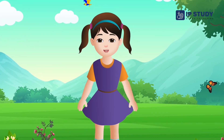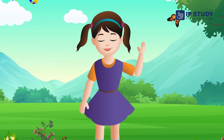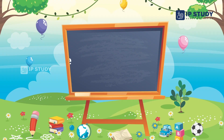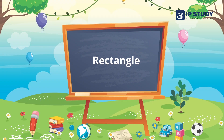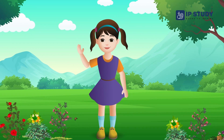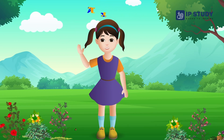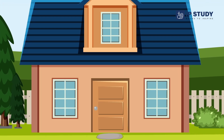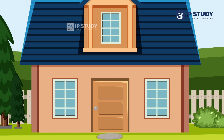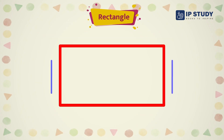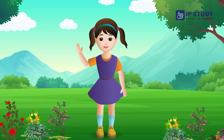Hello friends! Today we will learn about the rectangle shape. Have you seen the door? What shape is it in? The door is in rectangle shape. A rectangle has two short sides and two long sides, and opposite sides are equal.